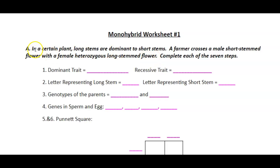We're going to go through the first problem here. It says in a certain plant, long stems are dominant to short stems. A farmer crosses a male short-stemmed flower with a female heterozygous long-stemmed flower. Complete each of the seven steps.